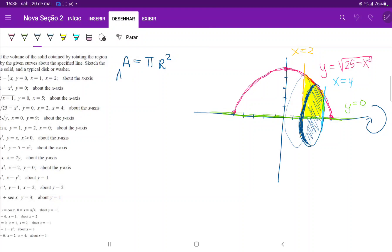So A is equal to pi times the square root of 25 minus x squared squared. Because it's radius squared, and thankfully this just cancels out. So we have A is equal to pi times 25 minus x squared.